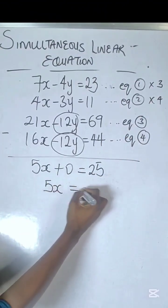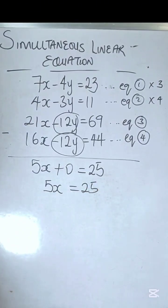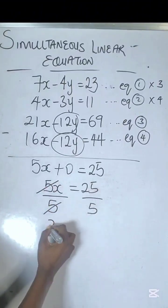Now when you get here, you always divide through by the coefficient of x. Dividing by 5, 5 divided by 5 is 1. You're left with x equals 5.